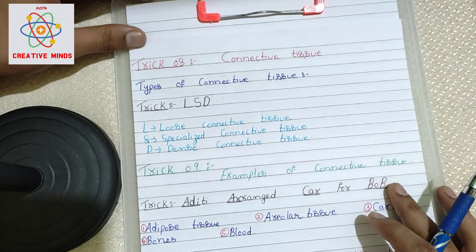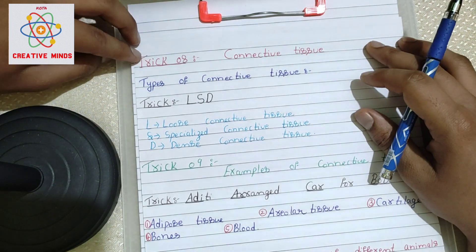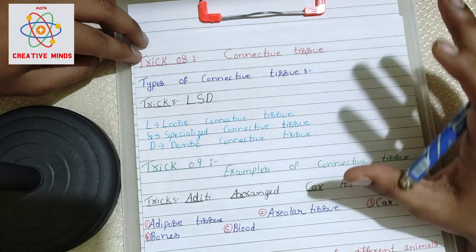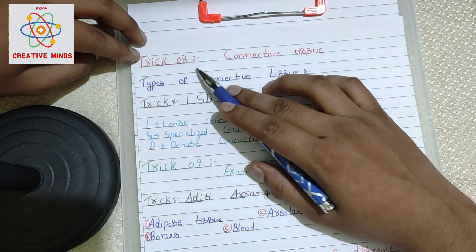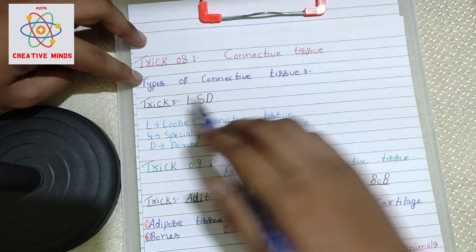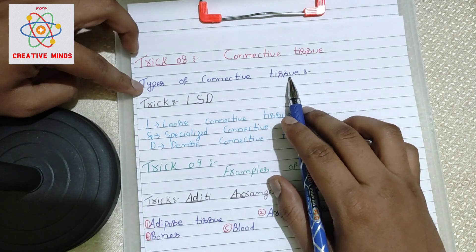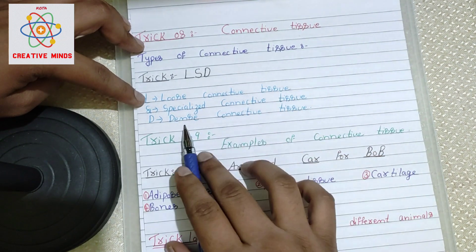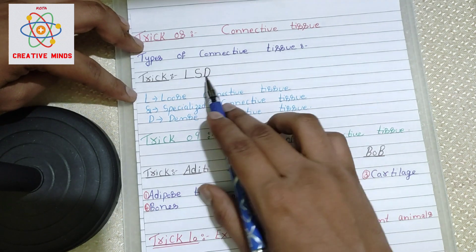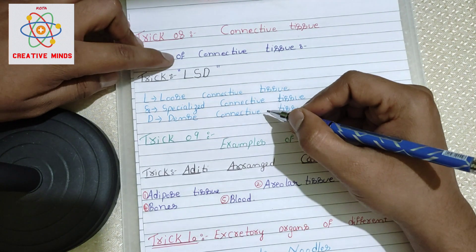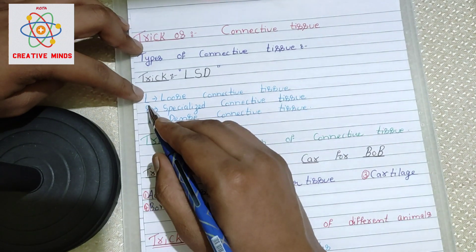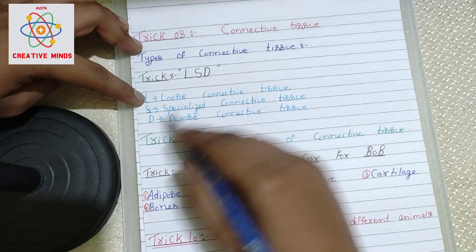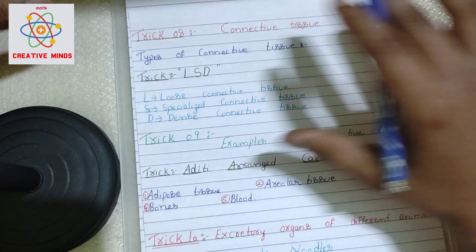Now let us move to trick number eight for connective tissue. First, the types of connective tissue: loose connective tissue, specialized connective tissue, and dense connective tissue. To remember them in sequence, use 'LSD' — L for loose connective tissue, S for specialized connective tissue, D for dense connective tissue. Trick number eight completed.